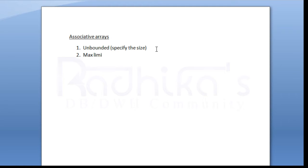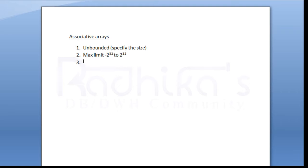The second point is the max limit. When you are trying to create an associative array, the max limit is from minus 2 to the power of 32 to plus 2 to the power of 32. So that is the second point — the negative and positive scaling range for associative arrays.